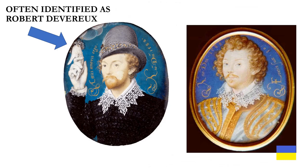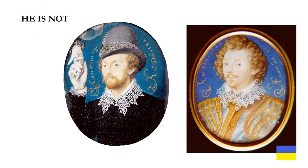The portrait on the left has been often identified online and elsewhere as Robert Devereux, the second Earl of Essex, who was executed in 1601 for treason. He is not.